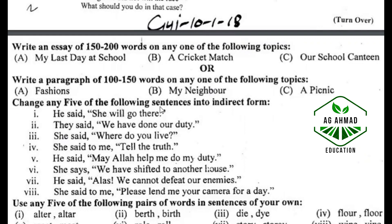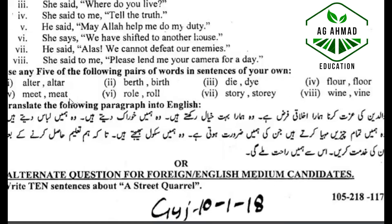Change any five of the following sentences into indirect form: He said she will go there. They said we have done our duty. She said where do you live. Use any five of the following pair of words in sentences: alter/evil, birth/evil. Translate the following paragraph into Urdu: والدین کی عزت کرنا ہمارا اخلاقی فرض ہے، وہ ہمارا بہت خیال رکھتے ہیں، وہ ہمیں خوراک دیتے ہیں۔